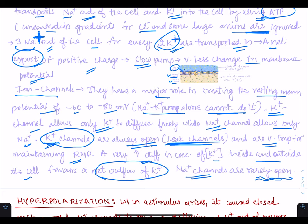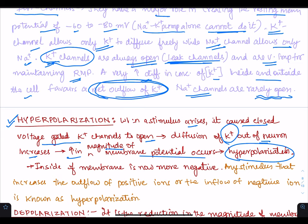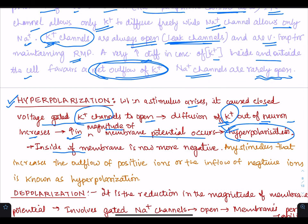Because of these channels there is always a net outflow of potassium favored by these ion channels. Now, what is hyperpolarization? When a stimulus arises it causes closed voltage-gated potassium channels to open. Diffusion of potassium ions out of the neuron increases. Because of this there will be a rise in the magnitude of membrane potential — this is known as hyperpolarization. The voltage-gated potassium channels open, causing diffusion of potassium out of the neuron and increasing the magnitude of membrane potential. As a result, the inside of the membrane becomes more negative. Any stimulus that increases the outflow of positive ions or the inflow of negative ions is known as hyperpolarization.